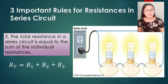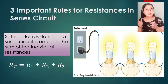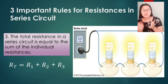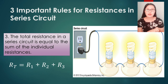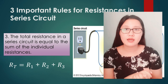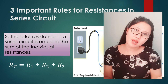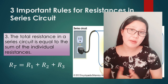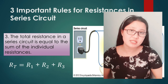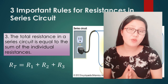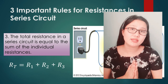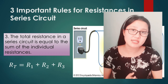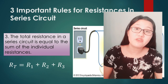The total voltage is equal to the sum of the individual voltages, and similarly for resistance. To summarize, in a series circuit, the electric current is the same for all components, but the resistance and voltage are different for each.